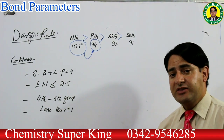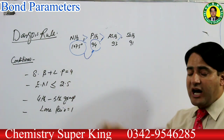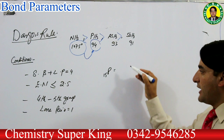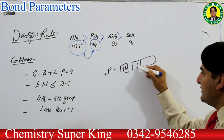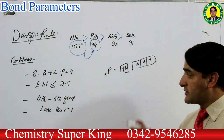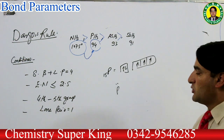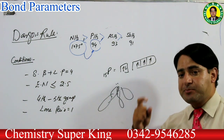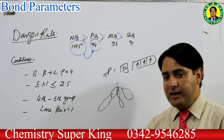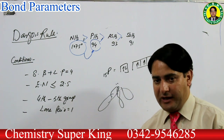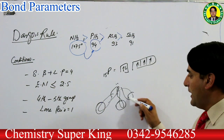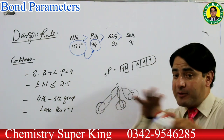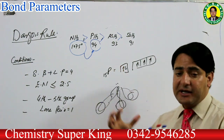Drago's rule کے مطابق PH3 میں phosphorus hybridization نہیں کرتا۔ Phosphorus کی outer electronic configuration 3s2 3p1 3p1 3p1 ہے — تین dumbbell-shaped p orbitals ہیں جو ایک دوسرے سے perpendicular ہیں اور 90° کا angle رکھتے ہیں۔ Hydrogen ان p orbitals کے ساتھ head-wise overlap کر کے bond بناتا ہے — اس لیے PH3 کا bond angle 90° کے قریب ہوتا ہے۔